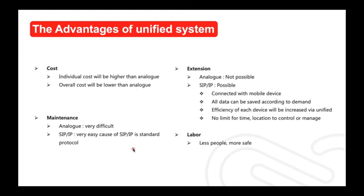Second is maintenance. Analog is very difficult to maintain because there is no standardized protocol. For example, if your video phone is over seven years old and the receiver unit breaks, you must replace both the receiver and sender units together, because every manufacturer has their own standard. But SIP IP is a global standard protocol — if your phone breaks, you just exchange or repair that one phone. With analog you must call many different suppliers, but with SIP you call one SIP supplier who can provide total service.